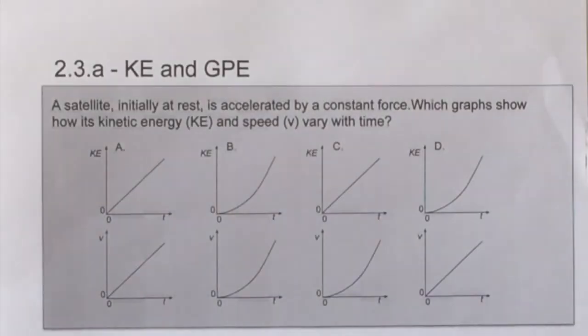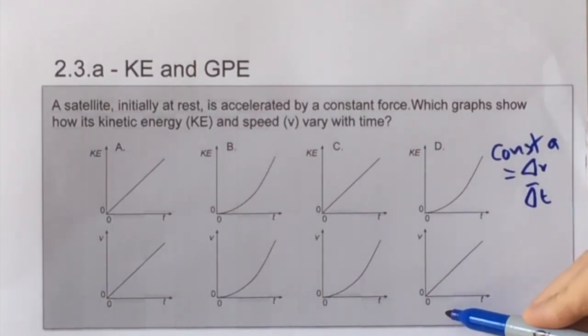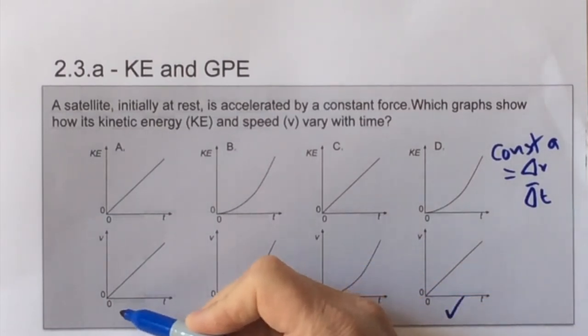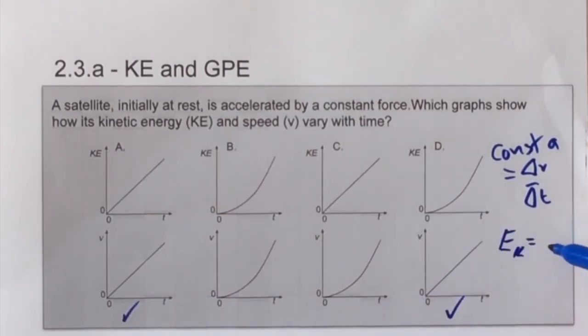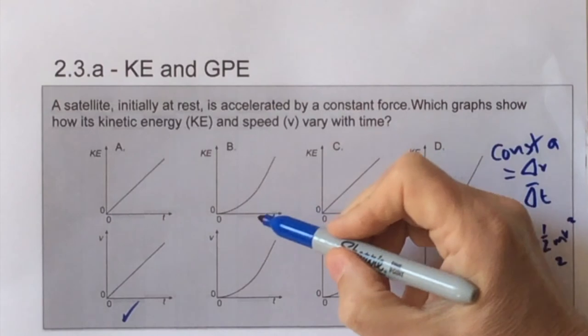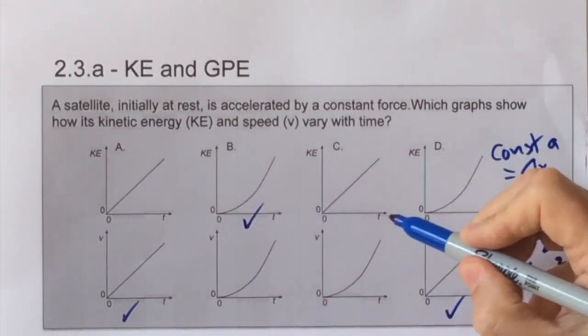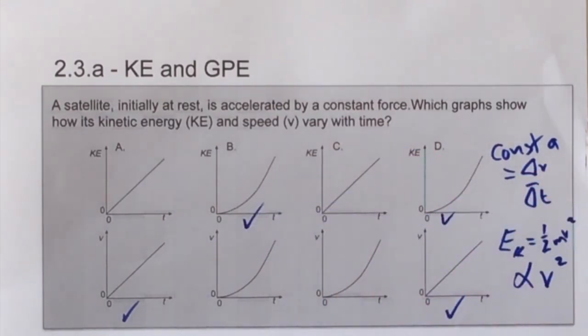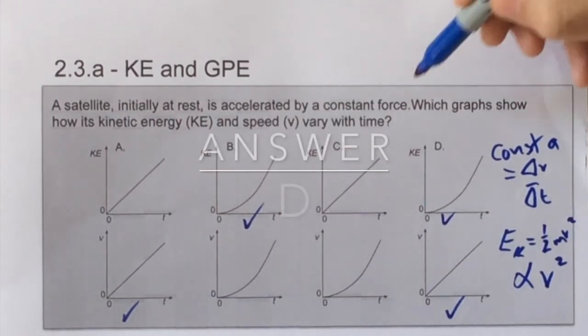Here we're interested in the shape of the graph and the variation of the various quantities with time. So we know that with a constant acceleration, v against t is constant, and therefore it must be a straight line through the origin, which is either A or D. And then we look at the second part, and the kinetic energy is proportional to v squared. The mass stays the same, and therefore that must be a parabolic increase in curve, and that would be B and D. And so we can see that the two ticks apply to D.